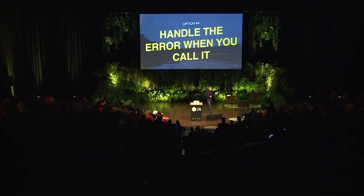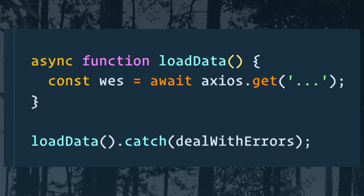The fourth option is to handle the error when you call it. Sometimes you want to handle the error at the call site because it's a special case. It's simple: make your async function called loadData, and when you call it you can just chain a dot-catch on to the end and deal with the error however you'd like.